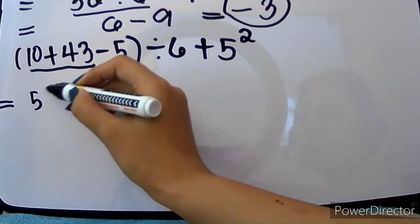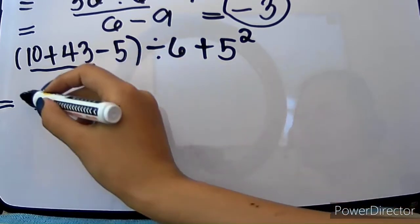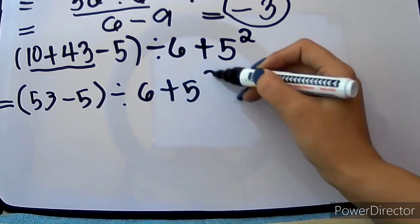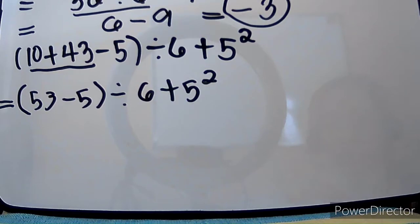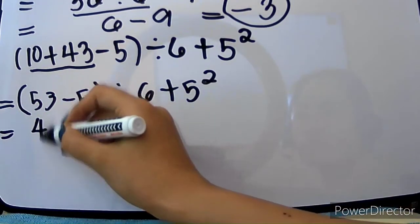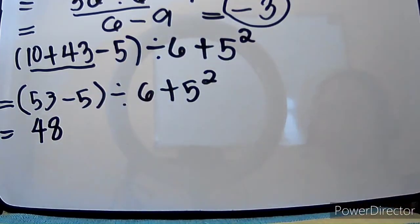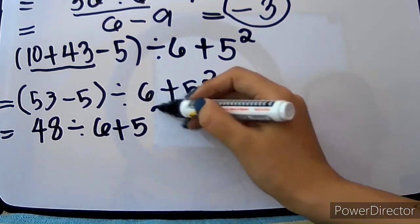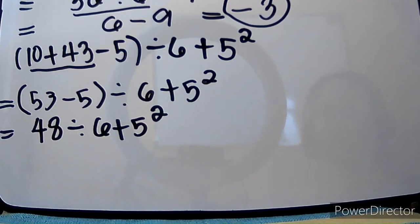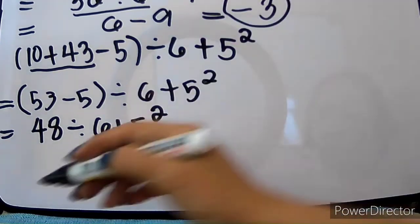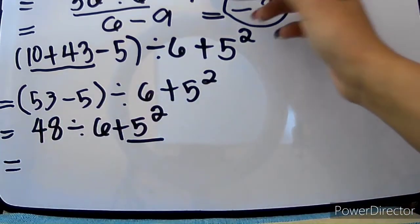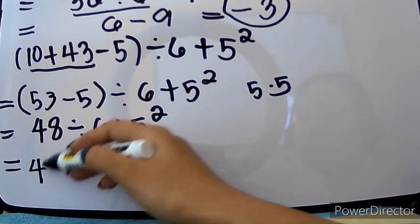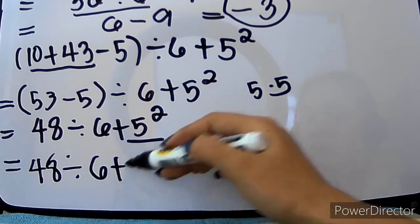So, we have 53 minus 5. Still, we have a parenthesis kasi may operation pa po sa loob. And then, 53 minus 5 will give us 48. And then, divide 6 plus 5 squared. Let's get first — we're done with letter G. And letter E na tayo. Which is, on here, 5 squared. Kung kalinang 3 squared ay 3 times 3, ang 5 squared naman ay 5 times 5, which will give us 25.